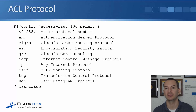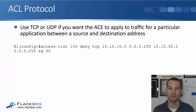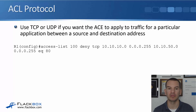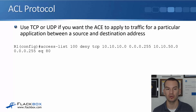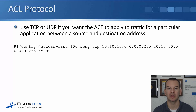You'll learn about VPNs or virtual private networks in a later lecture. When you're specifying the protocol, use TCP or UDP if you want that access control entry to apply to traffic for a particular application between a source and a destination. So in this example, we've said access list 100, deny TCP from the 10.10.10.0/24 network going to the 10.10.50.0/24 network, equals 80. So this would be HTTP traffic between those two networks that we're going to deny. When it's a particular application, specify TCP or UDP and then you'll have the port number at the end.